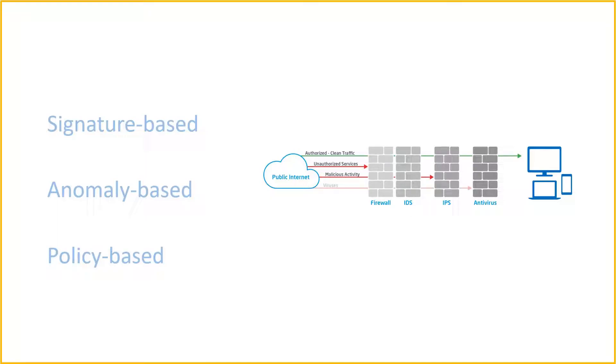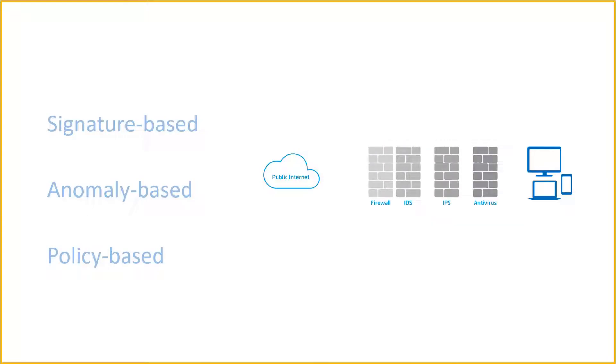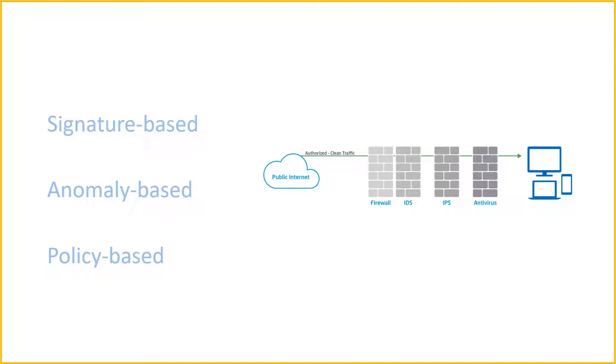Some intrusion prevention systems also use honeypots — decoy high-value data — to attract attackers and stop them from reaching their targets.